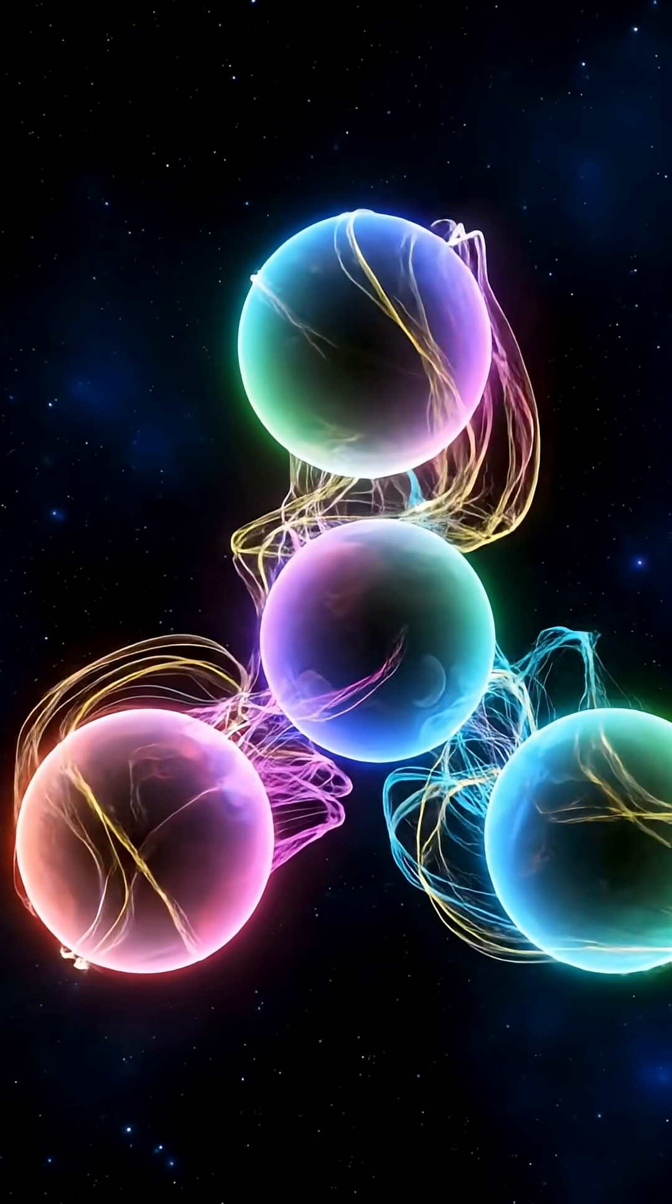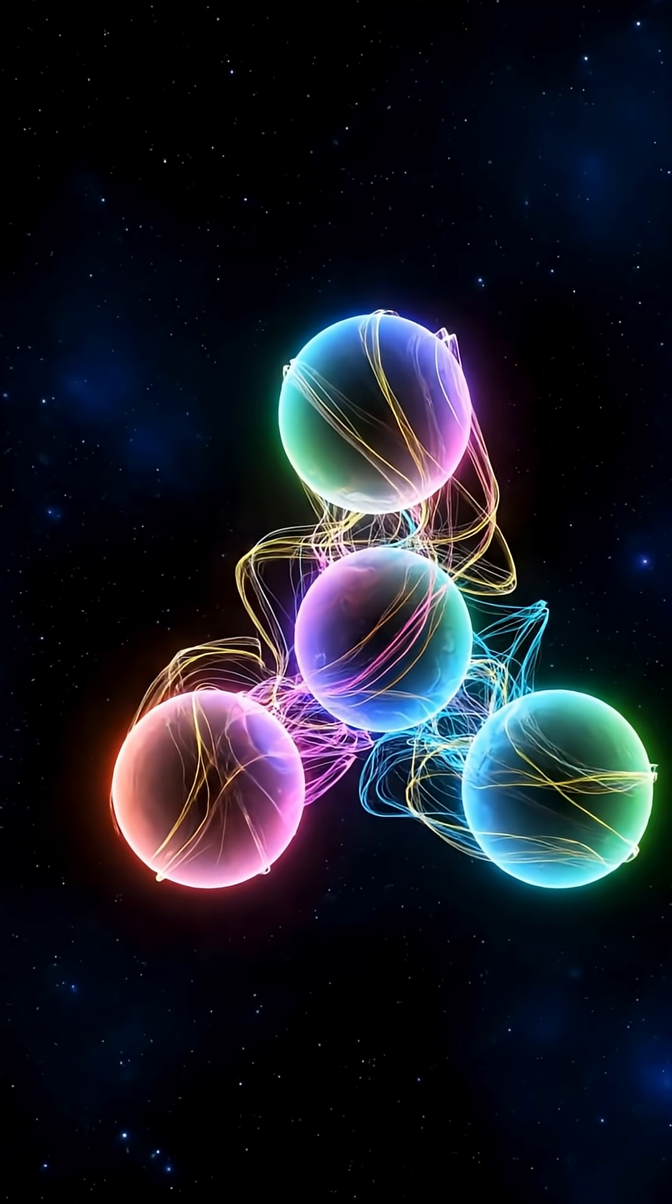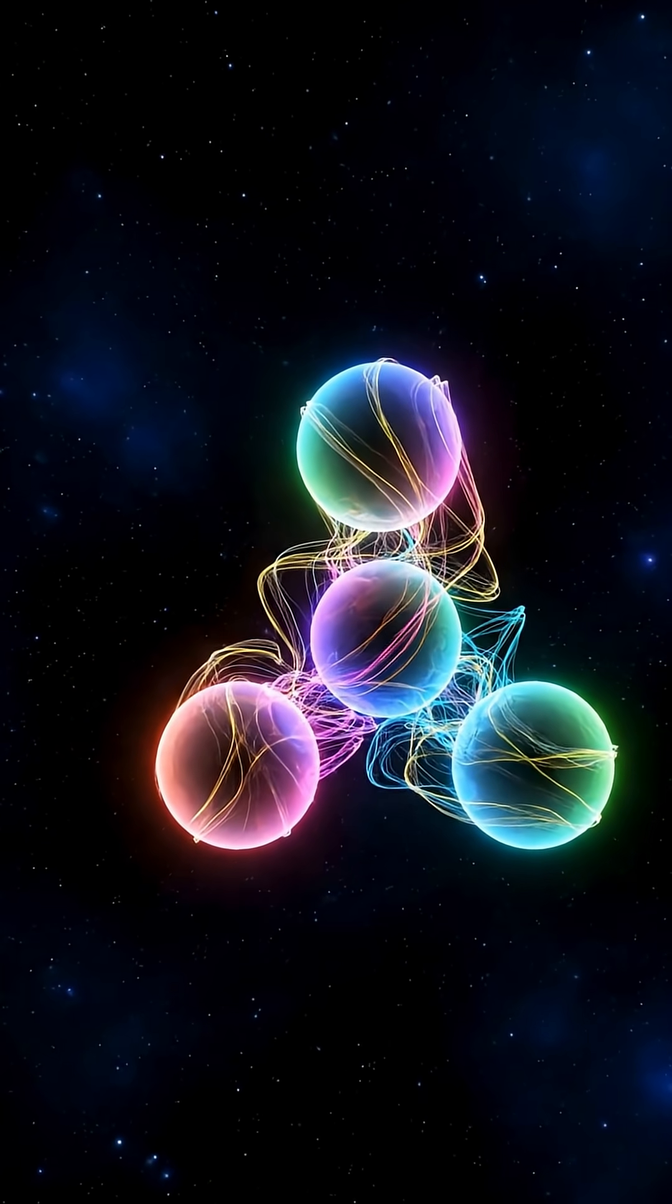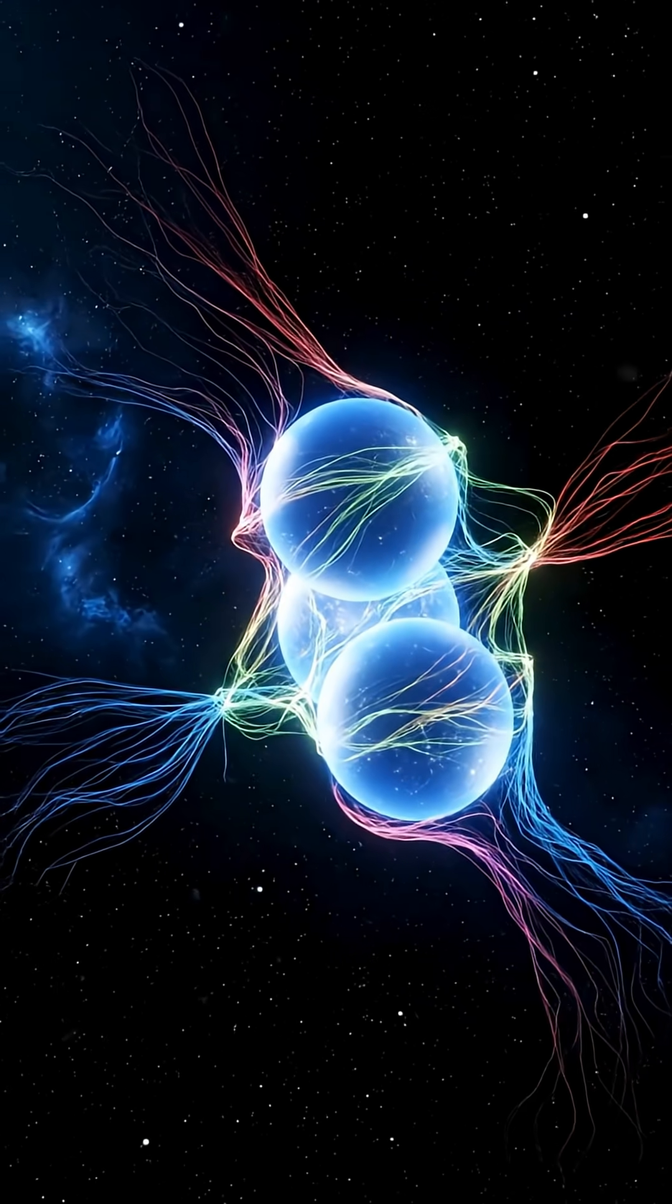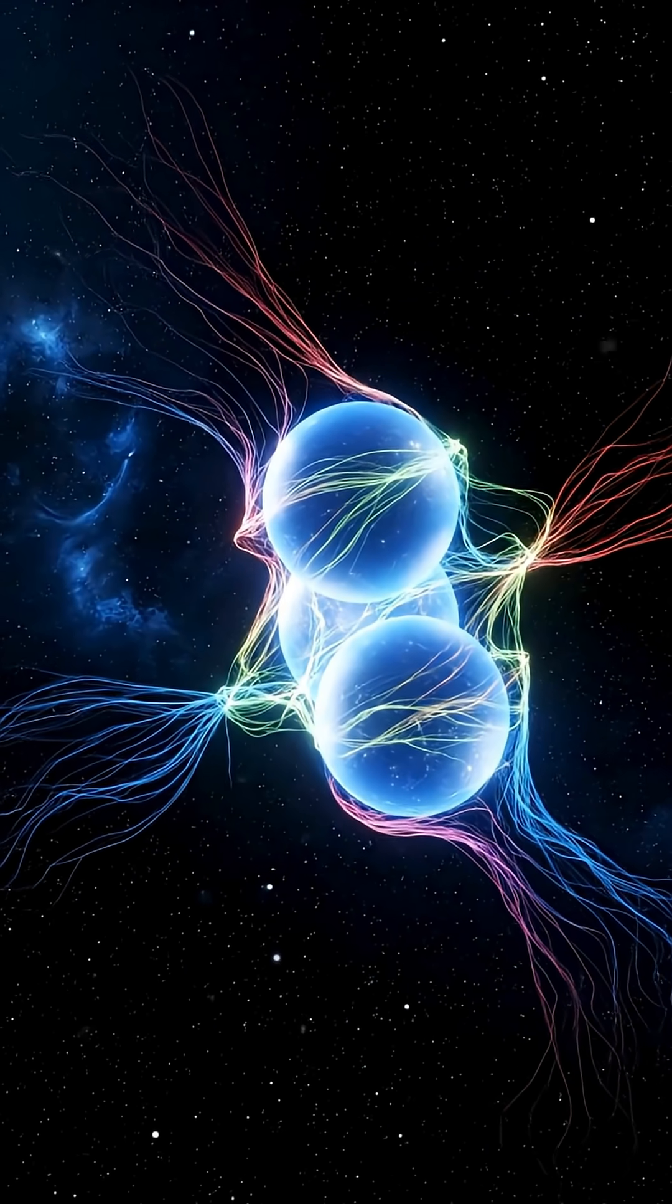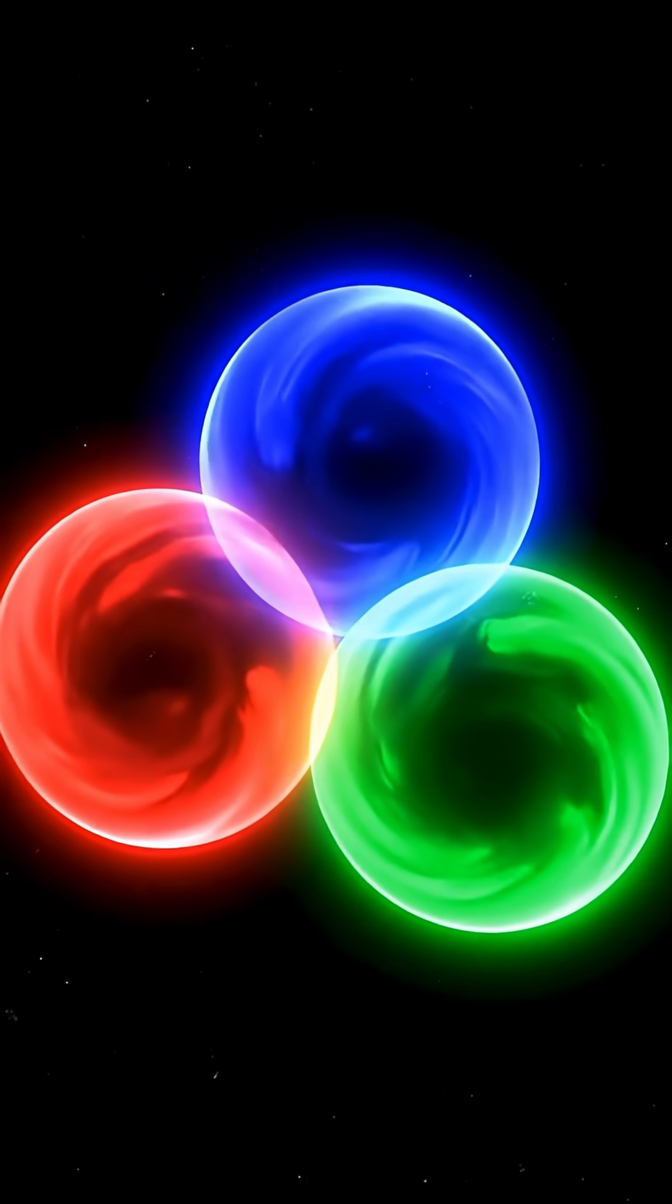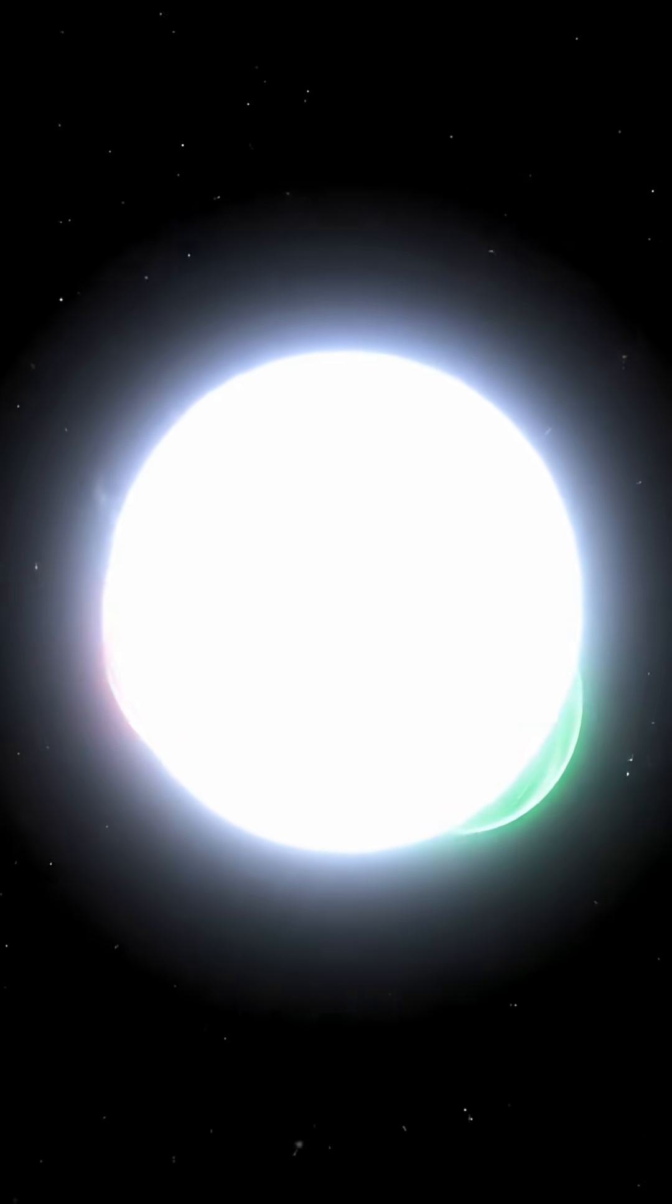In physics, color is not a real color—it's a property used to explain how quarks stick together. Think of it as an invisible language that tells quarks how to combine. Everything in the universe is born from this invisible game of colors.